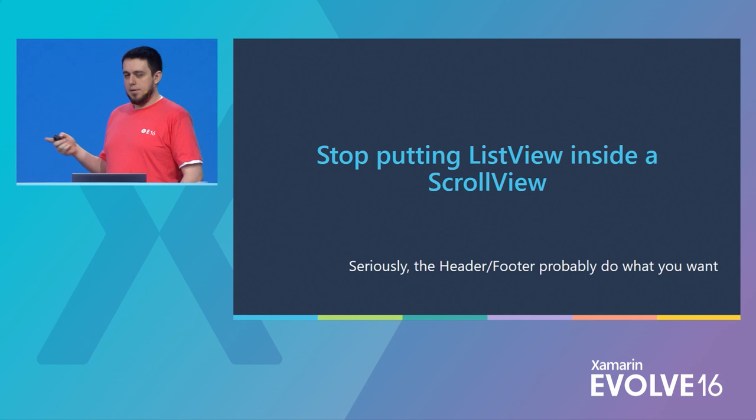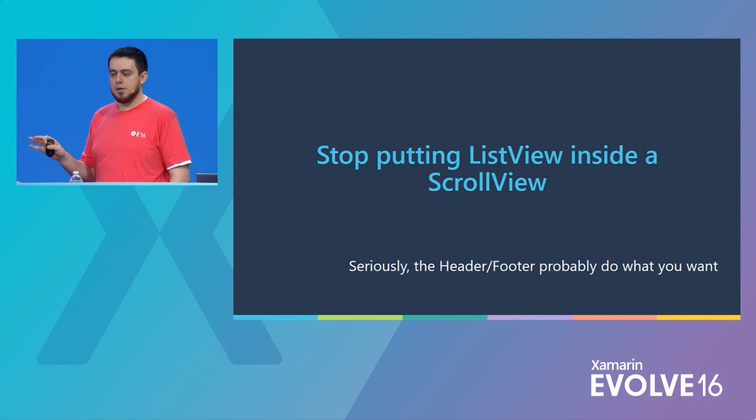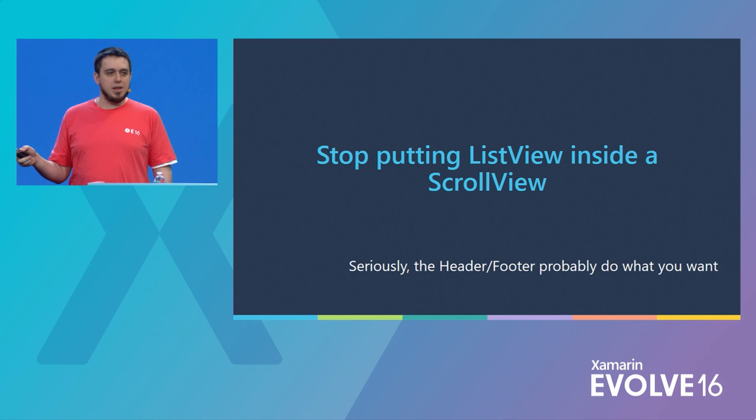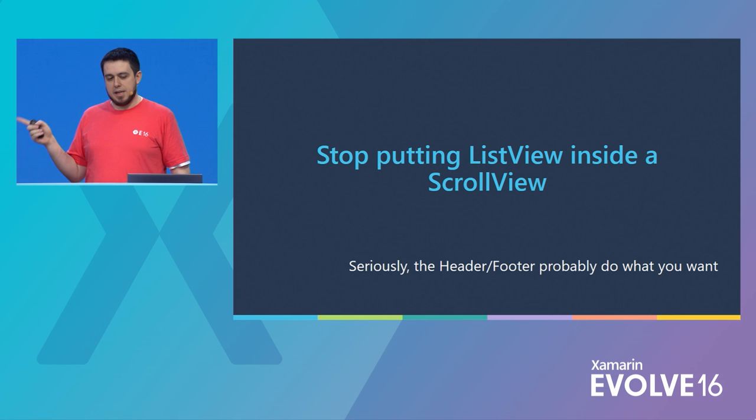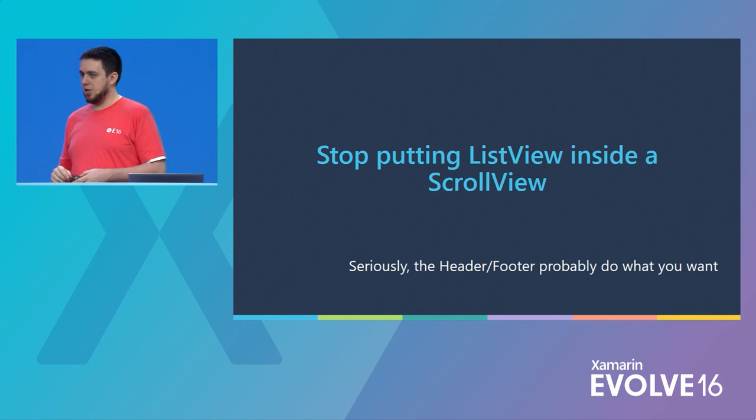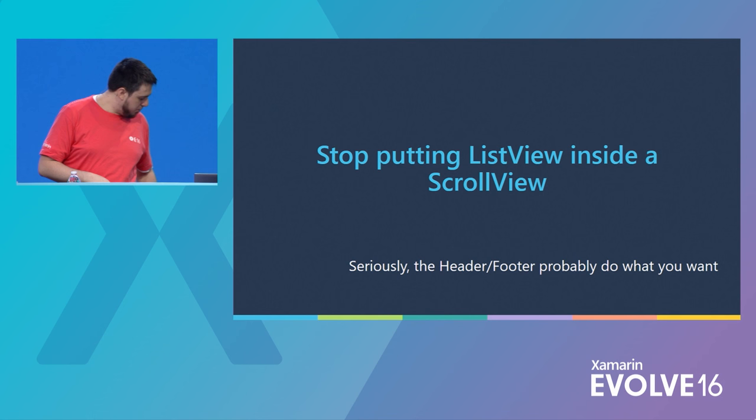Please stop putting list views inside of scroll views. I've seen this so many times. It breaks virtualization — it's completely unnecessary. And it will mean that when you rotate your app, it will sit there for about five minutes and then finally rotate. Instead, use the header and footer properties to add content above or below the list view, which is 99% of the time what people want.